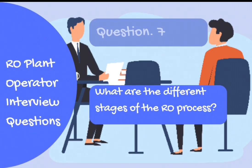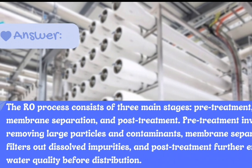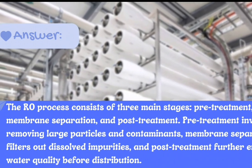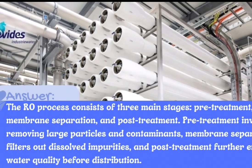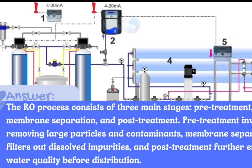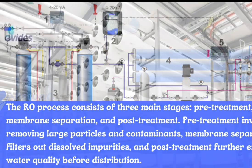Question number 7: What are the different stages of the RO process? Answer: The RO process consists of three main stages: pre-treatment, membrane separation, and post-treatment. Pre-treatment involves removing large particles and contaminants. Membrane separation filters out dissolved impurities, and post-treatment further enhances water quality before distribution.